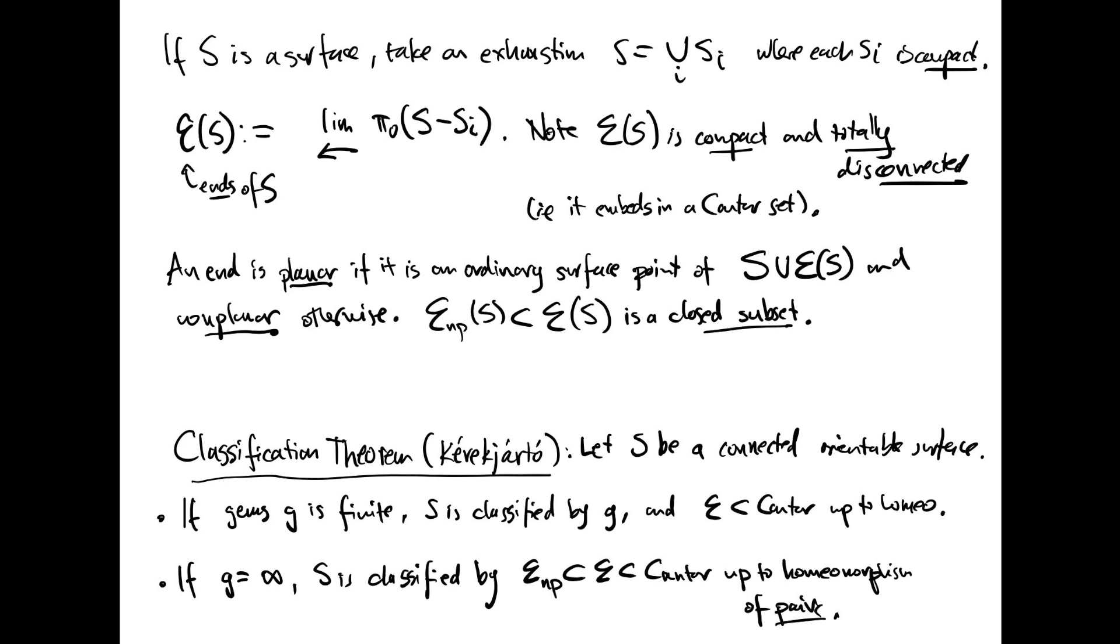Now let's talk about the classification of surfaces. The theorem is due to Kerakiato. First of all, we need to talk about ends of a surface. The definition makes sense for lots of different kinds of topological spaces, but anyway, if S is a surface, we can define the ends of the surface in the following way.